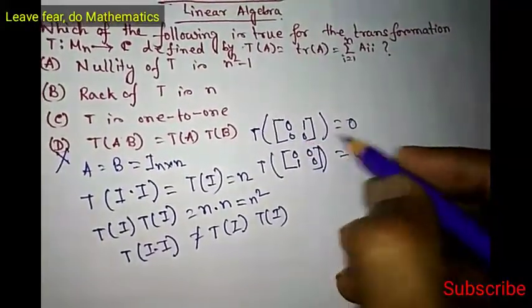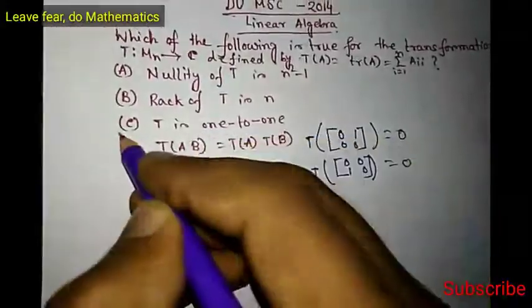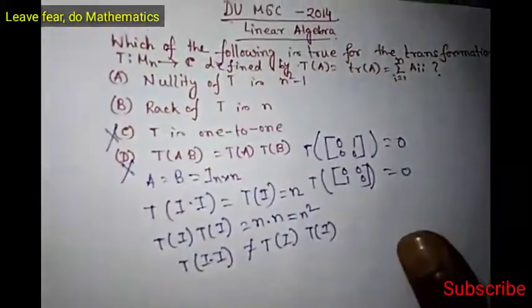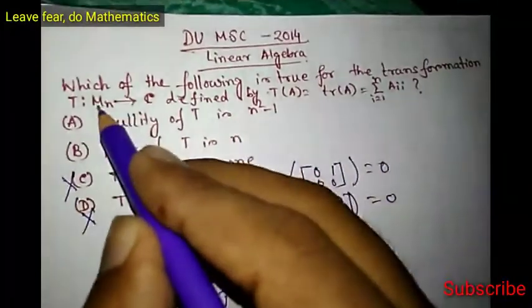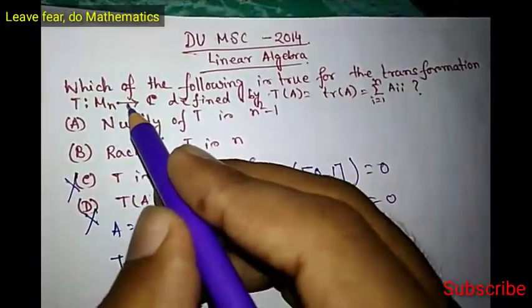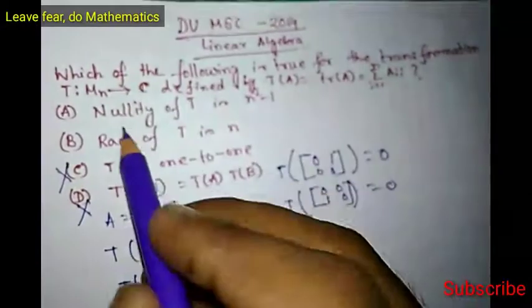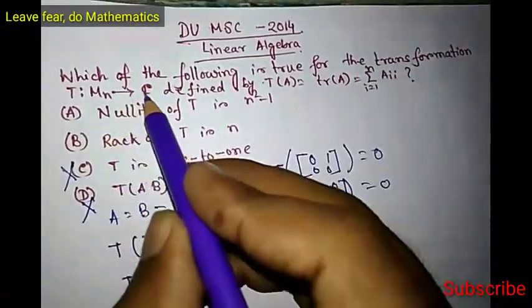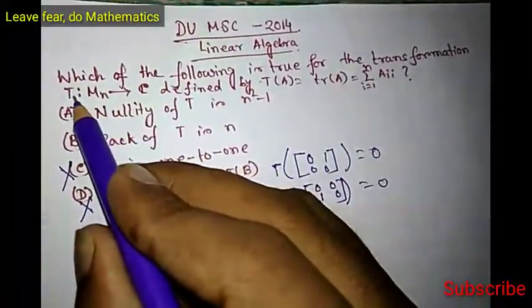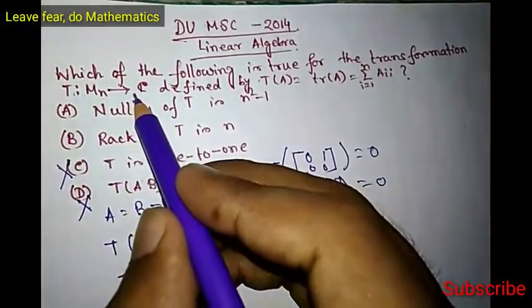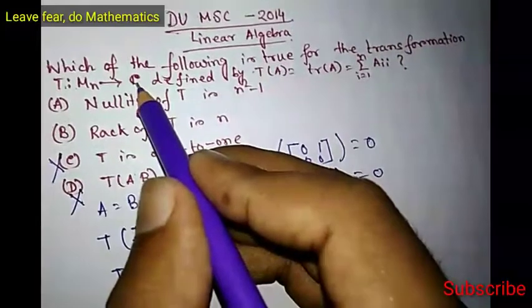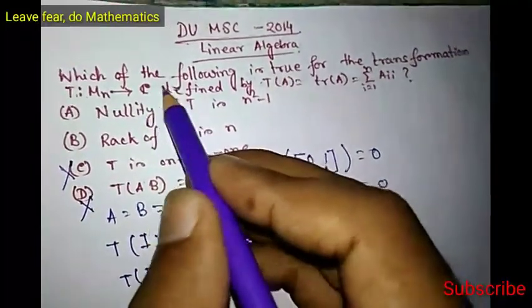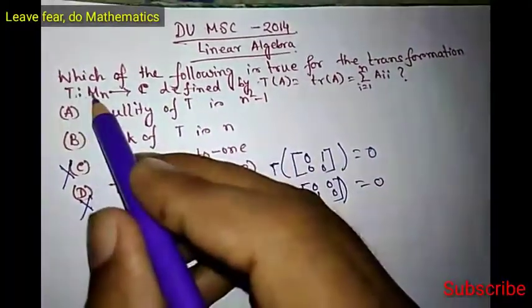Now what about options A and B? As we have mentioned, for domain and codomain, both the base field is C. So the rank of T can be 0 or 1 because the dimension of C as a vector space over C is 1. So the rank of T is either 0 or 1.